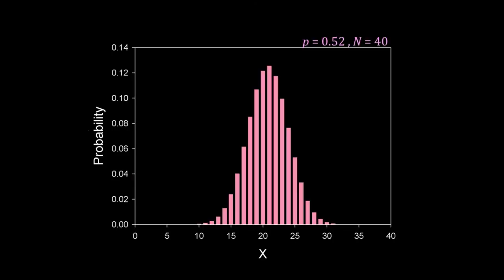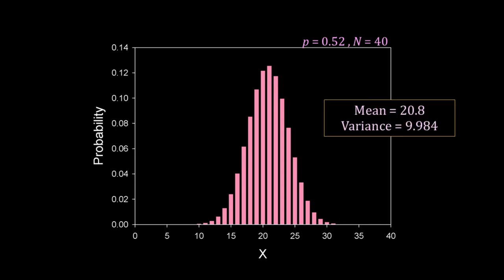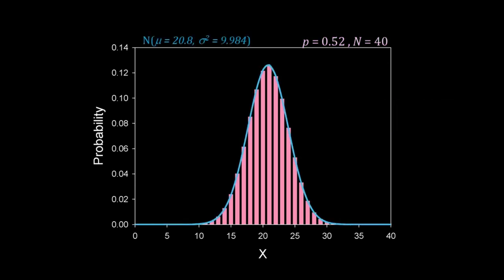Here is a binomial distribution with p = 0.52 (close to 0.5) and n = 40. The mean is 20.8 and the variance is 9.984. Here is the approximating normal distribution with mean 20.8 and variance 9.984 — shown as the blue line. The approximation is excellent. This way we can also approximate a Poisson distribution using the normal distribution.